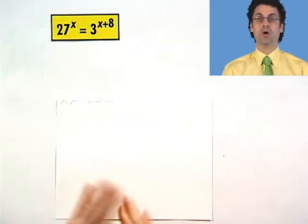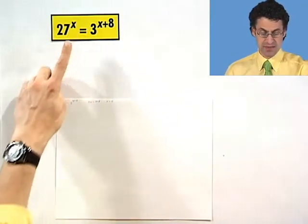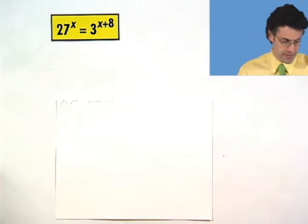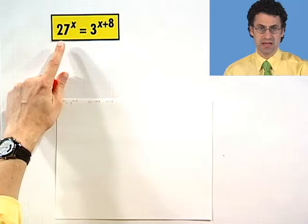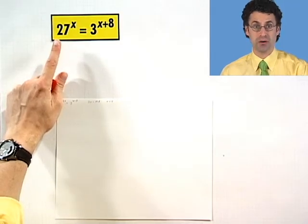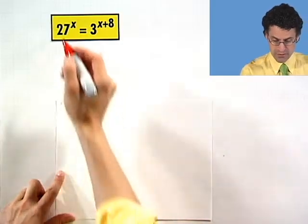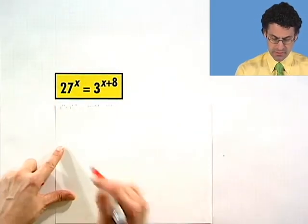So how do we deal with this? Well, what we try to do is to write everything we see in terms of one fixed base. I see this 3 here, so let me see if I can write 27 as 3 something. Well, we can if we think about it. Because in fact 27 is 3 raised to the third power. So I can replace this with the following equivalent statement.